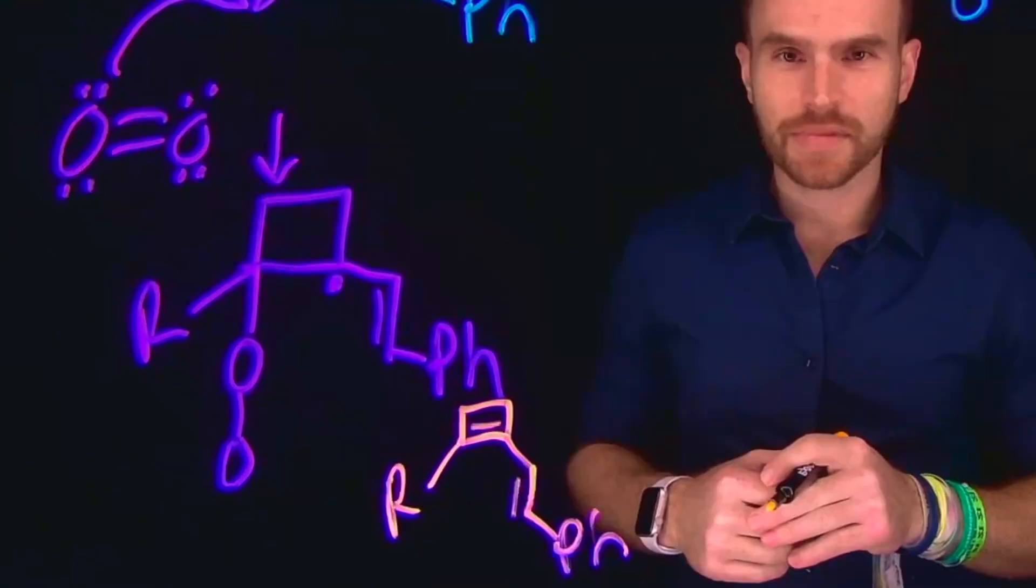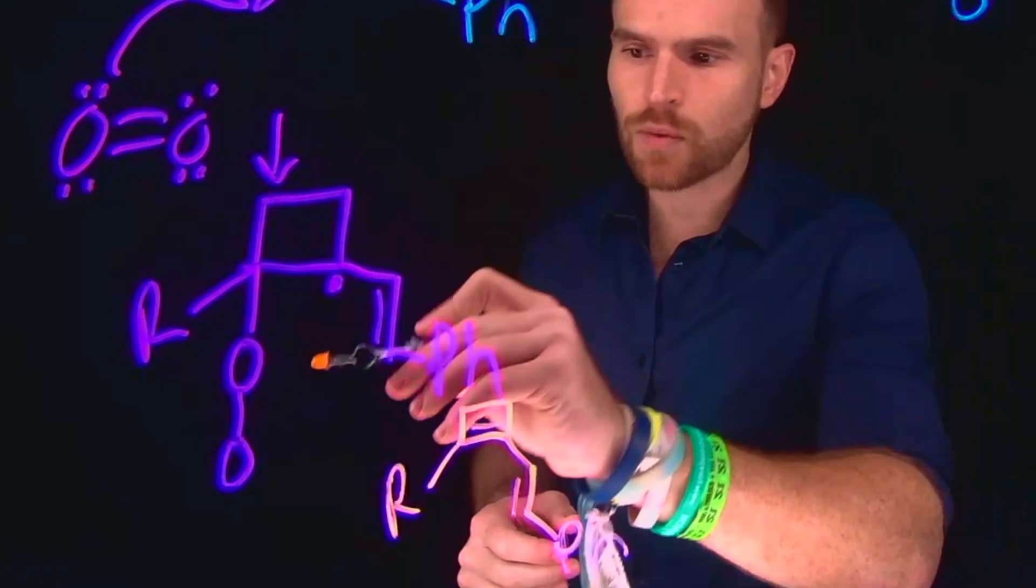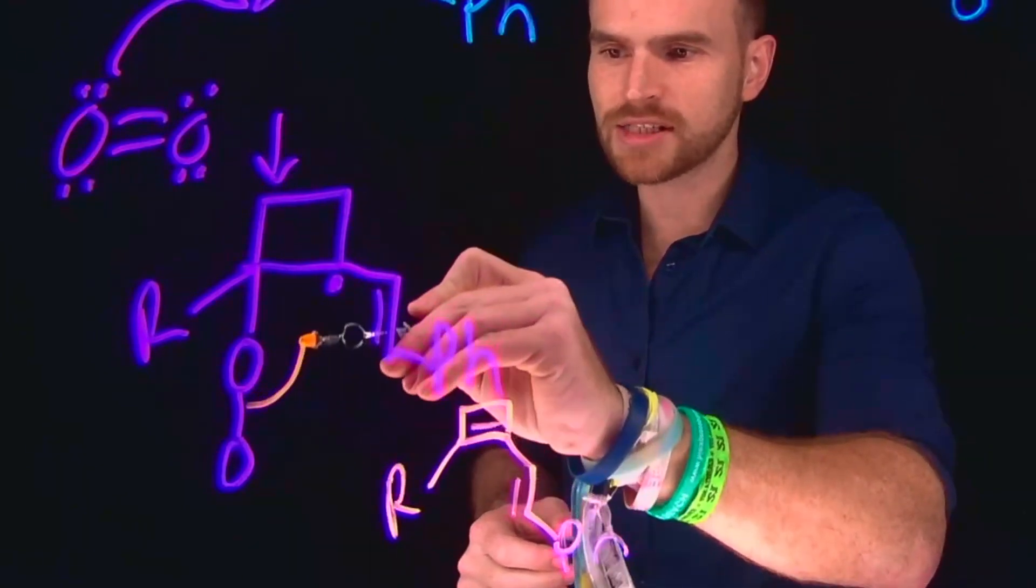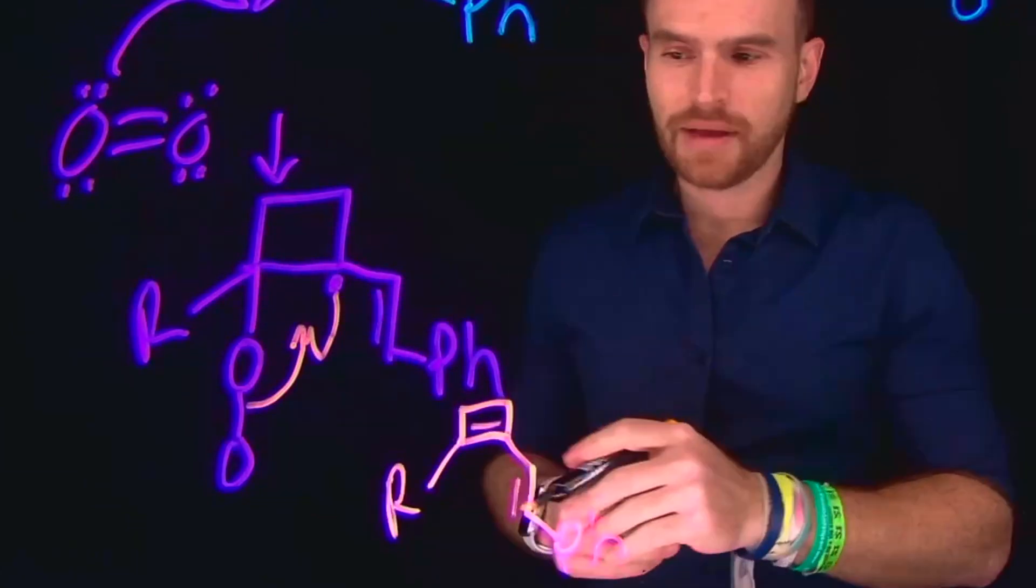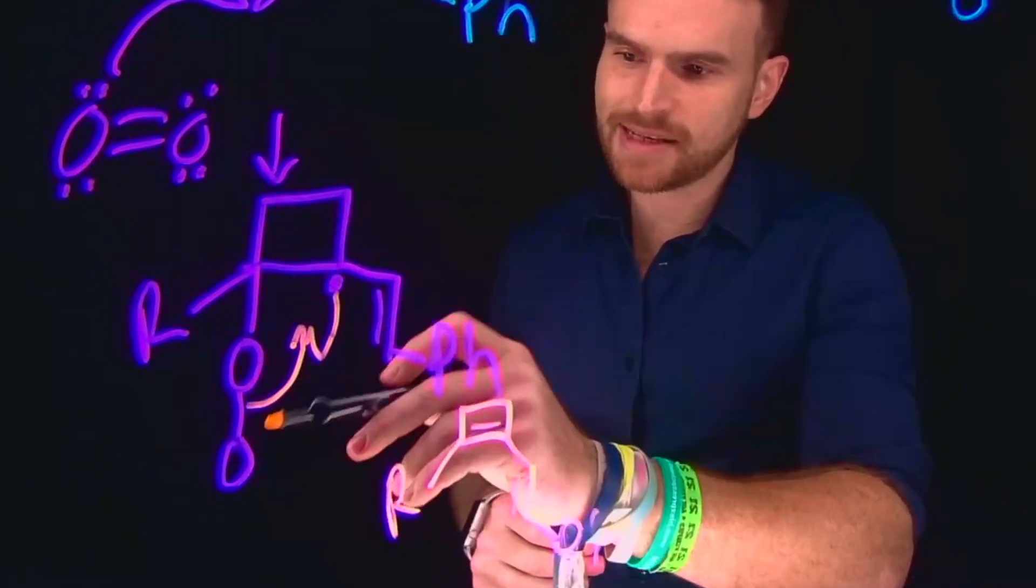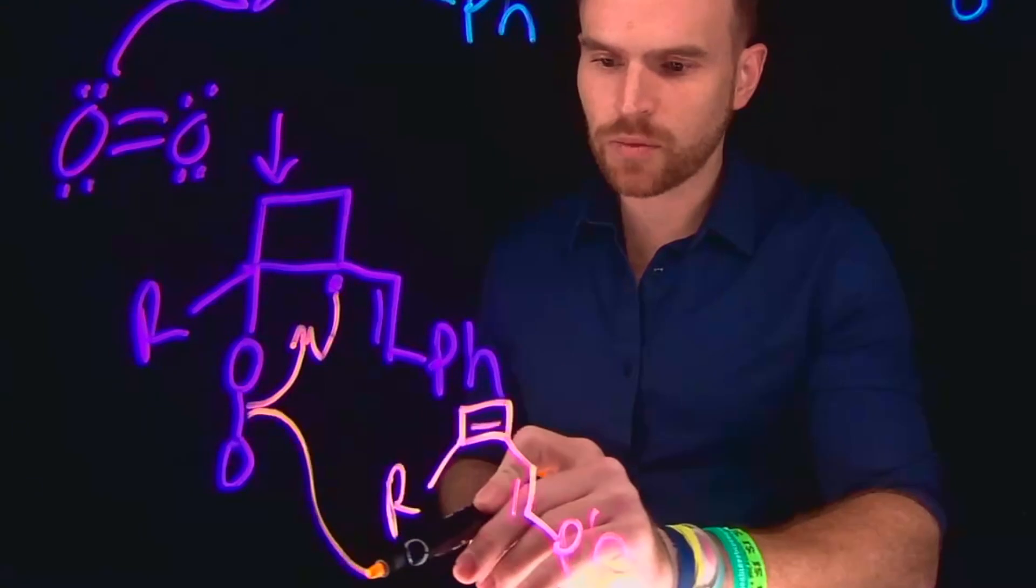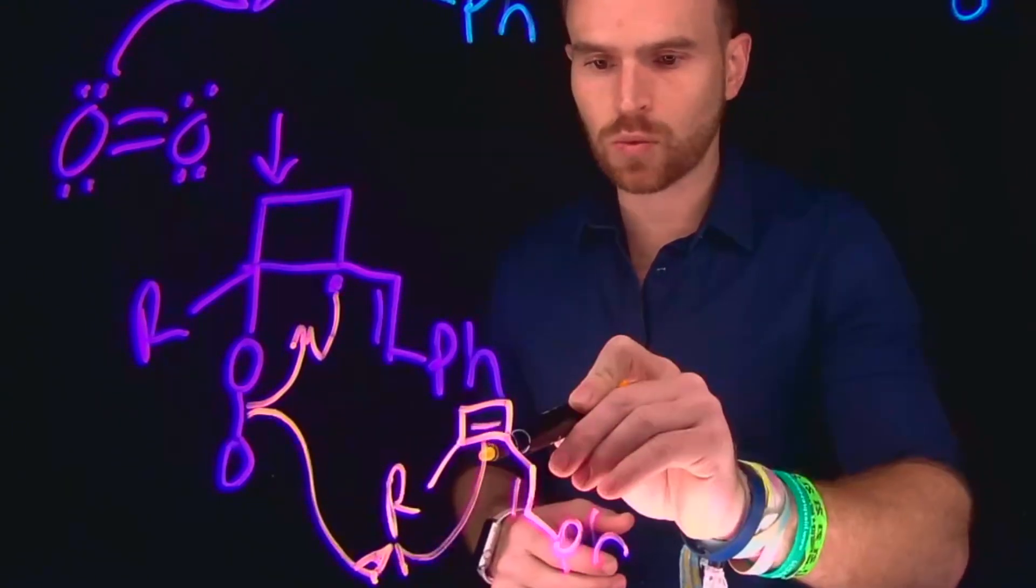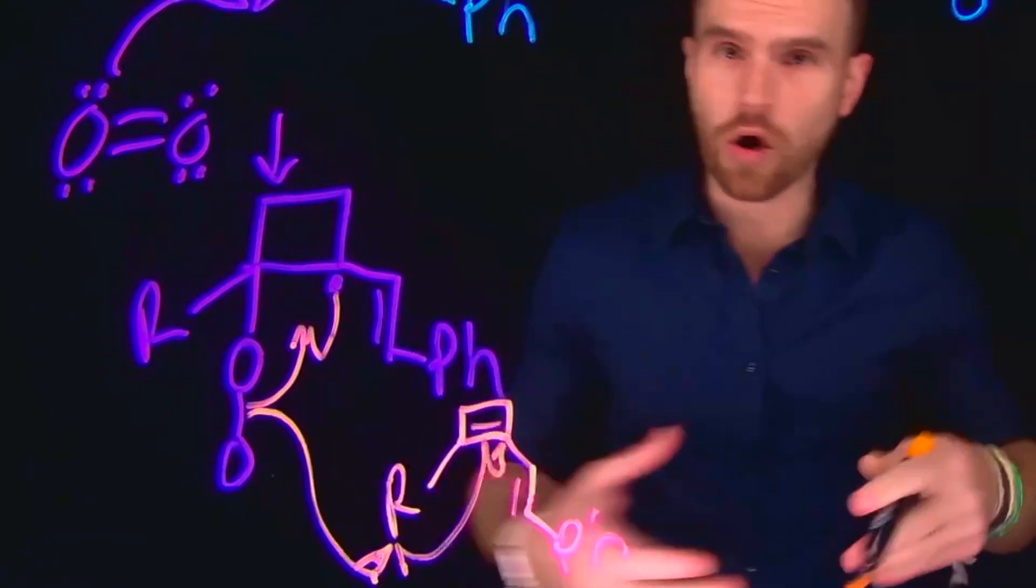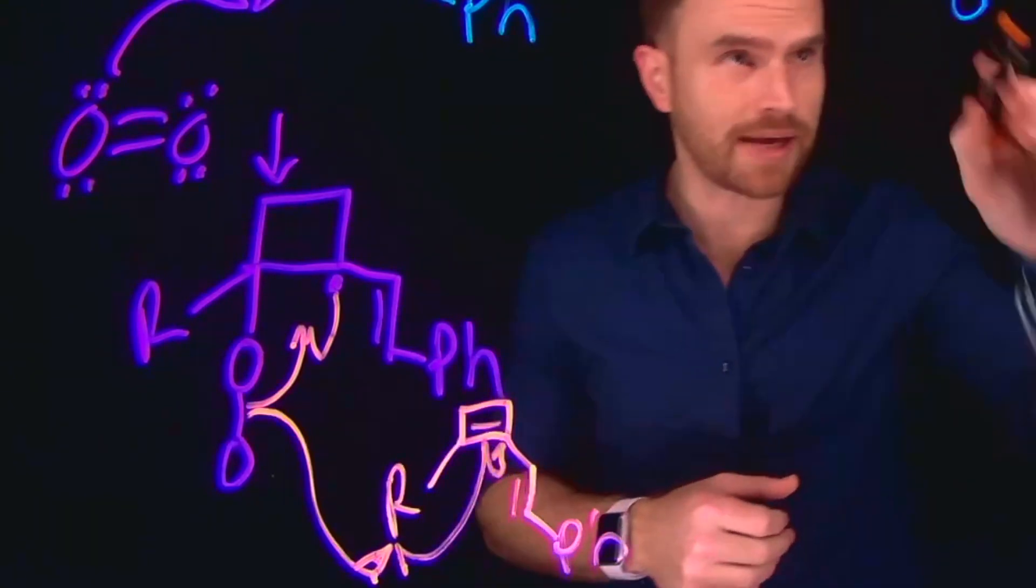So what's going to happen now that we have this radical is one of the electrons in this bond will come and form an epoxide ring at this position, and the other electron contained in this covalent bond is going to come and react with another one of our starting material species to regenerate a radical which can go on and do multiple reactions further to make a ton of product.